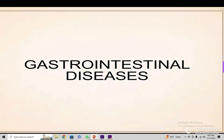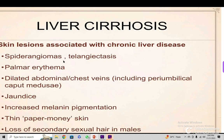We will now discuss gastrointestinal diseases, although this is a very long discussion. Cirrhosis of the liver has definite peripheral stigmata. With chronic liver disease or cirrhosis, there are spider angiomas, palmar erythema, clubbing, dilated abdominal and chest veins including periumbilical veins, caput medusae, jaundice, increased melanin pigmentation, thin papery skin, and loss of secondary sexual hair.